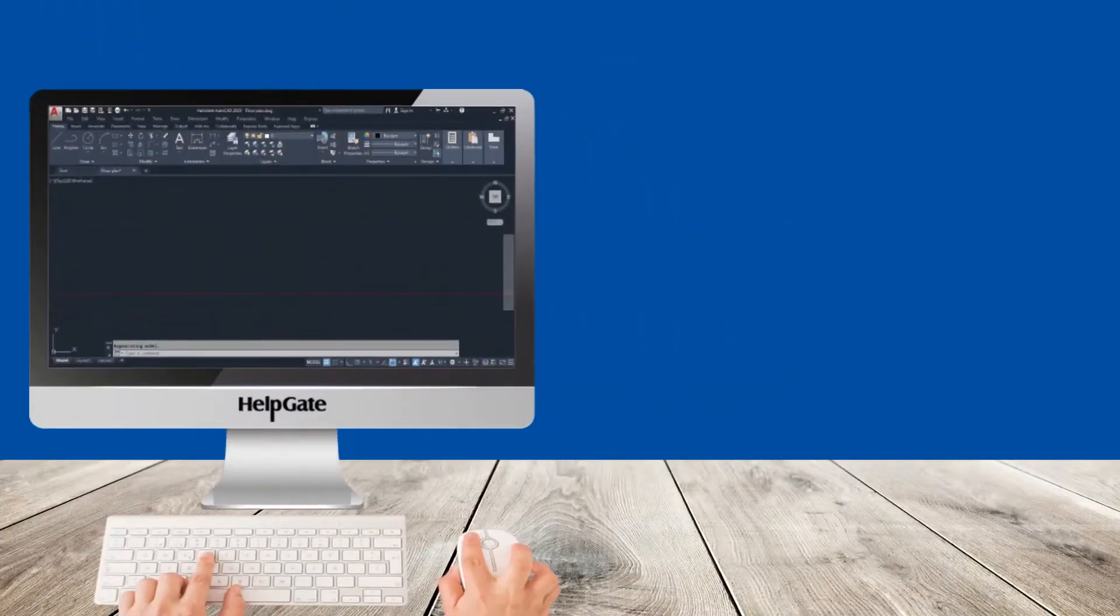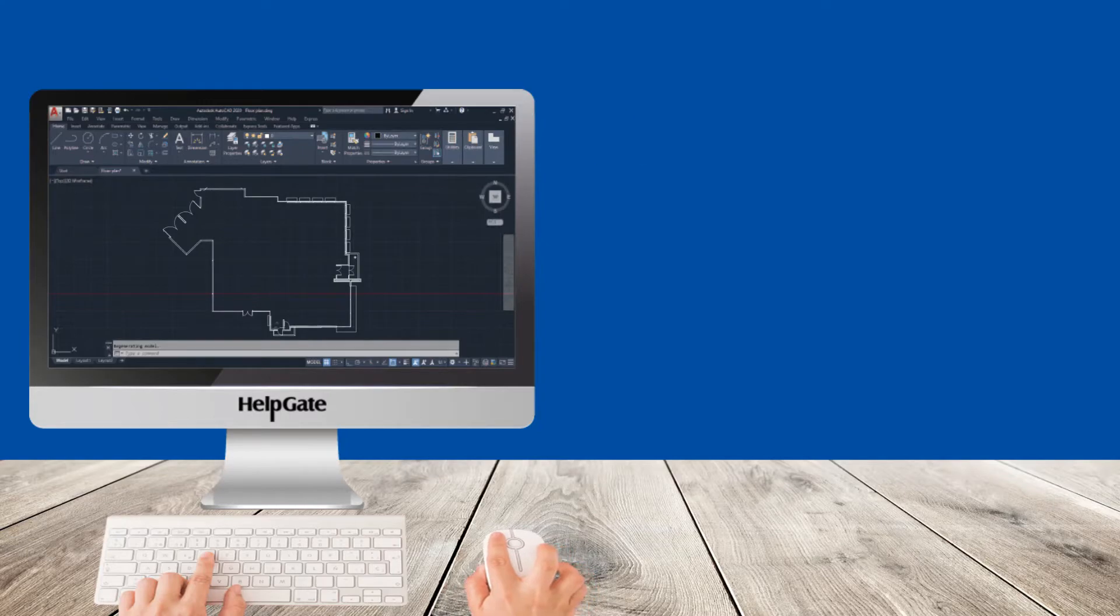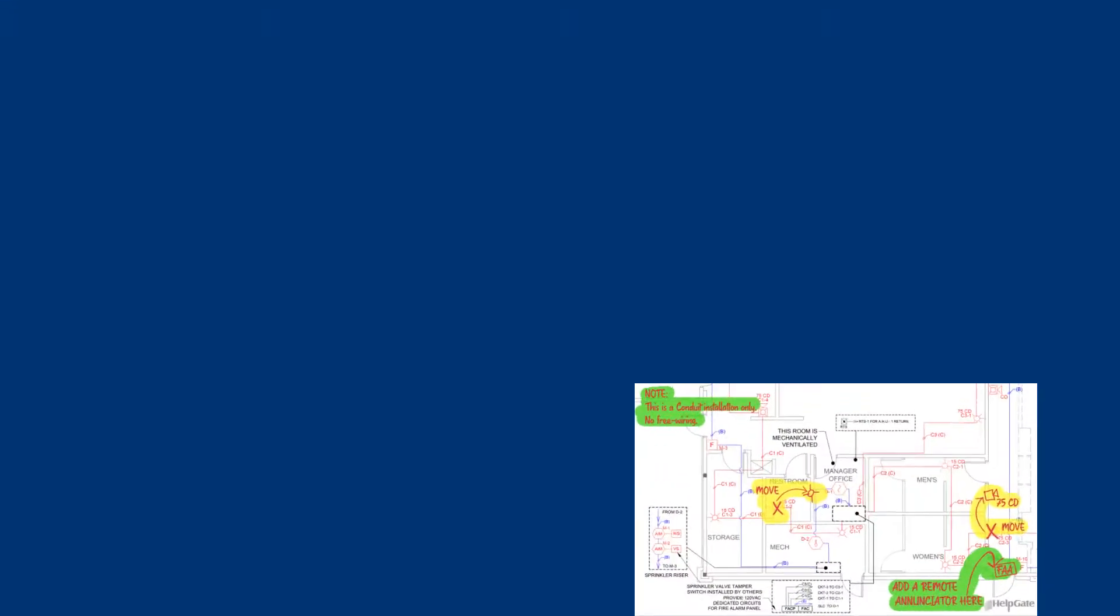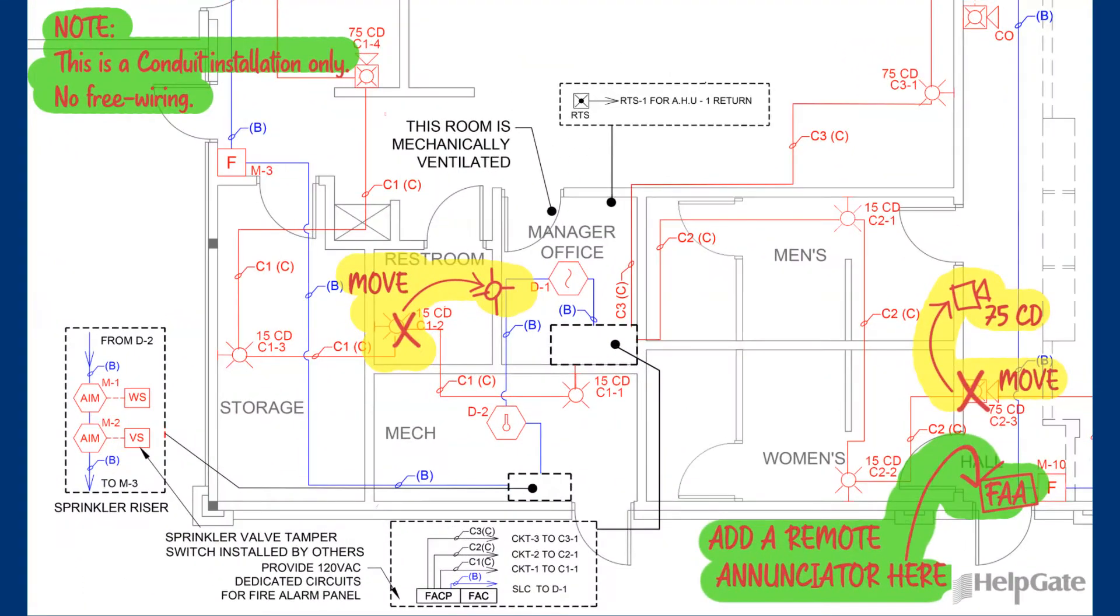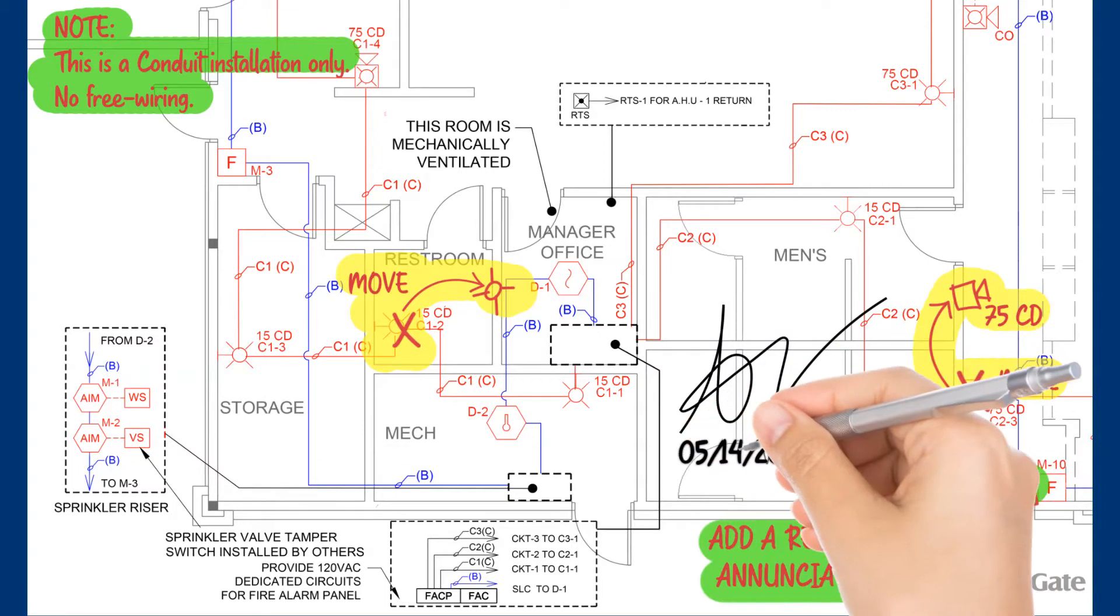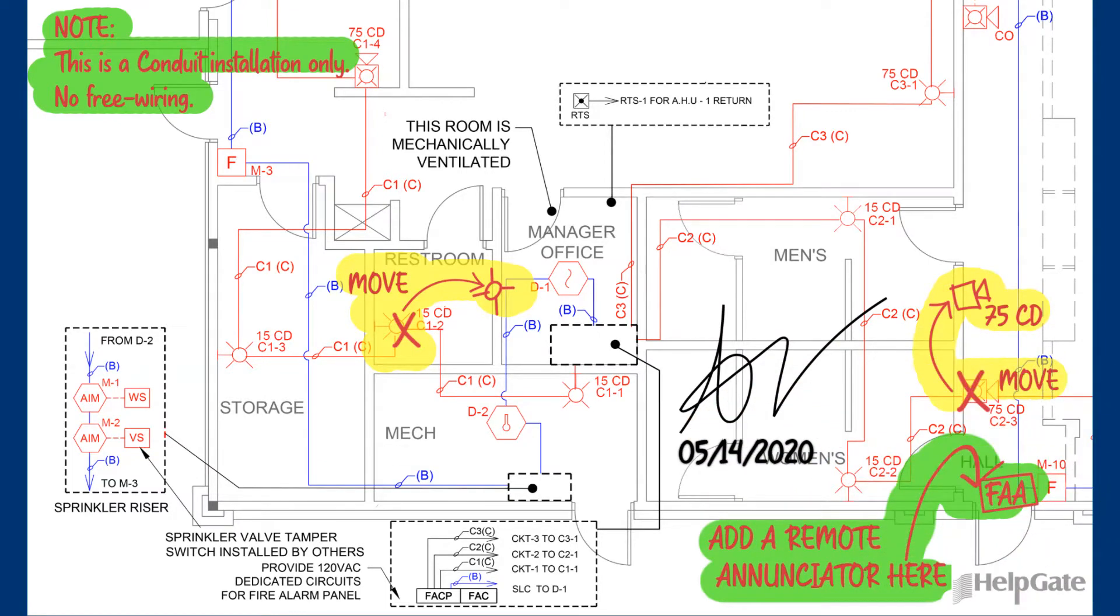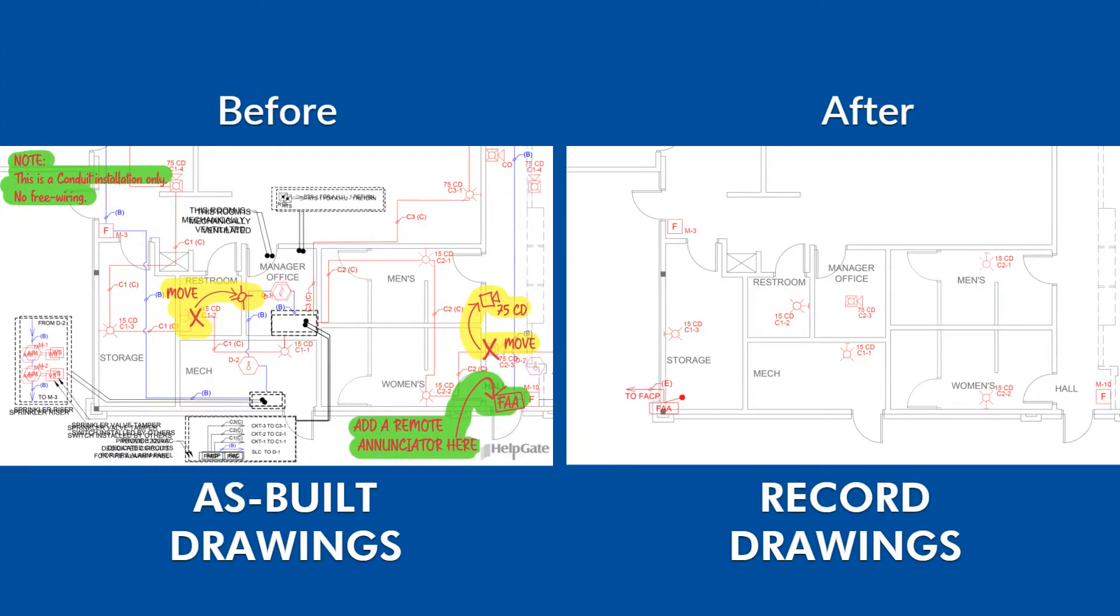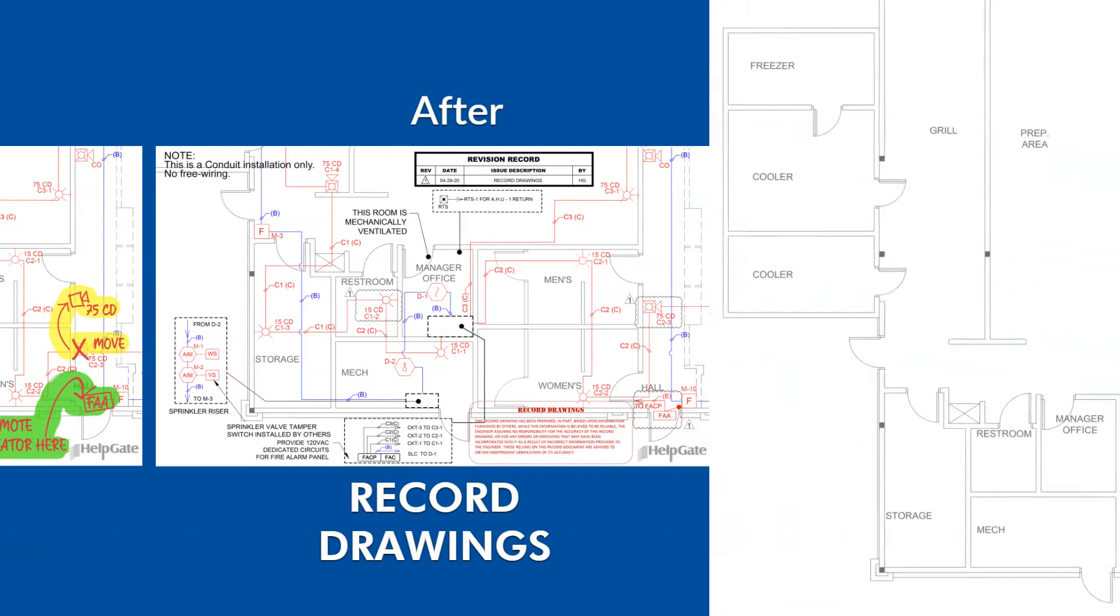Record drawings are produced by a CAD operator professionally updating the as-built drawings. These drawings show the final condition of an installation at the time that the documentation is signed, dated, and released by the installation contractor. The record drawings show all deviations from the last approved set of drawings that was professionally prepared.